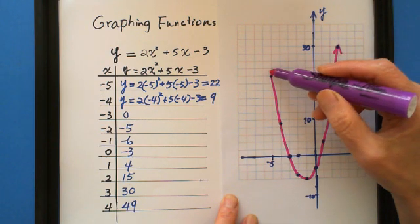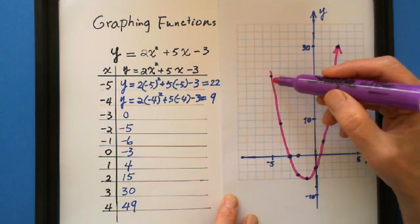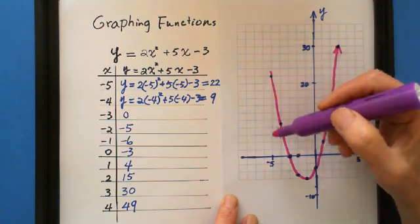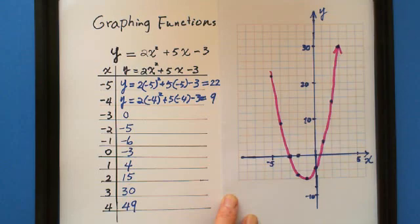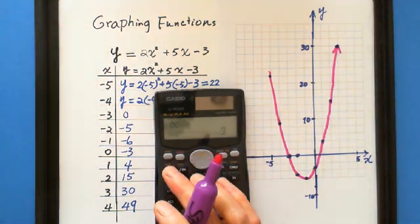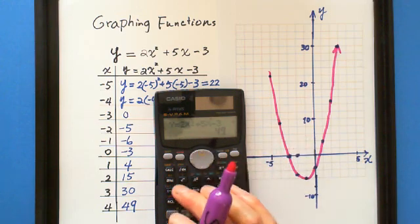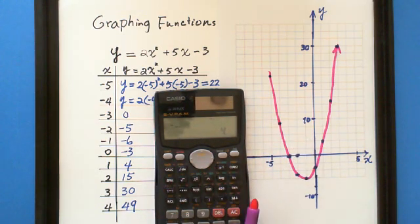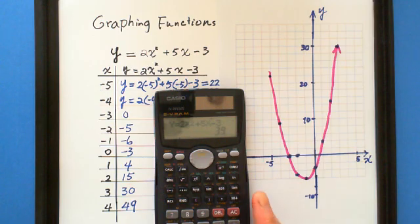If you want to make this more perfect, you can choose negative 6. Negative 6 and 39,